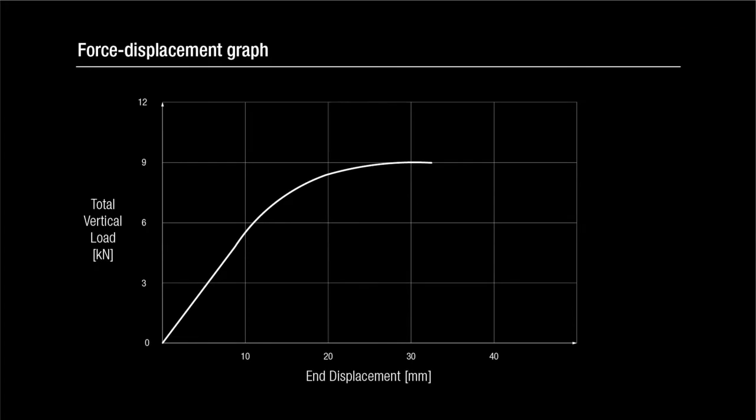The graph shows an initial linear relationship between the applied force and the vertical displacement, corresponding to the bending of the beam. However, once local buckling of the flange occurs, the slope progressively reduces until it converges onto a reduced but still positive value. This demonstrates the inherently stable post-buckling response from the observed phenomenon.